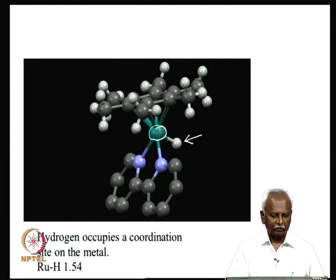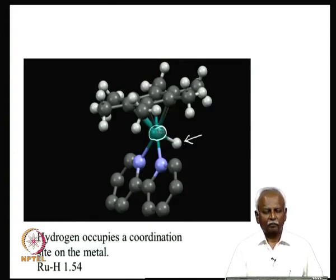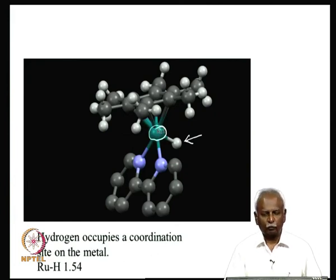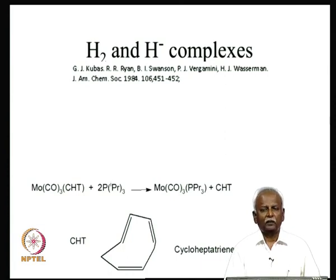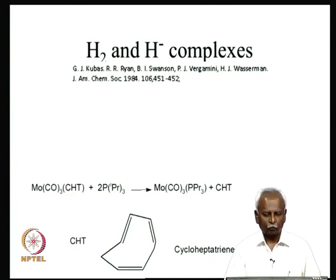The distance between ruthenium and hydrogen is around 1.54 Å, exactly what you expect for a single bond. Hydrogen is the only element that interacts through only a sigma-bonded interaction, because there is only an s orbital and no pi interactions are possible. It was discovered fairly recently — about 25 to 30 years ago — that it is possible to form not just hydride complexes but also dihydrogen complexes, where the metal interacts with H₂ as a whole molecule rather than simple H⁻.